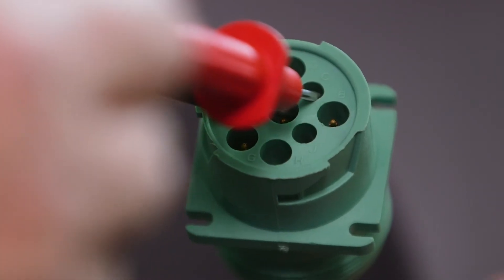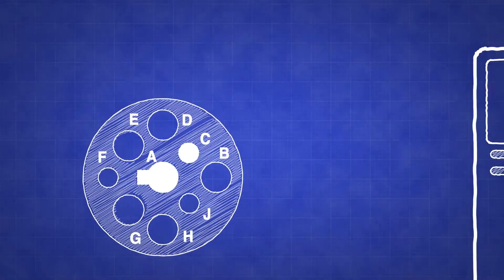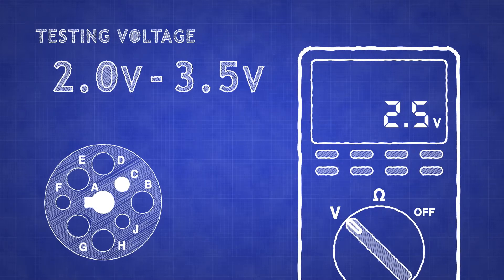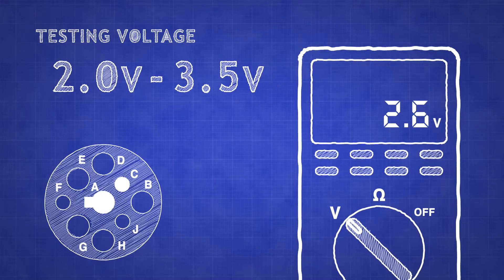Connect the positive probe in pin C and the negative probe in pin A, the ground. The voltage should be between 2.0 volts and 3.5 volts.